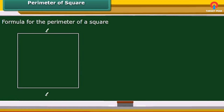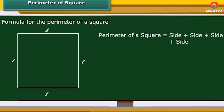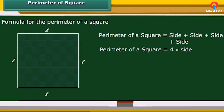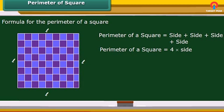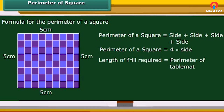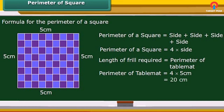Now let us work out the formula for the perimeter of a square. All four sides of a square are equal in length. Therefore, the perimeter of a square is 4 multiplied by its side. For example, you want to add frills to all sides of a square table mat whose side is 5 centimeters. The length of frill required equals the perimeter of the table mat, which is 4 × 5 = 20 centimeters. Therefore, a 20-centimeter long frill is required.